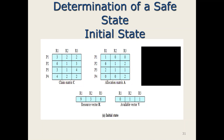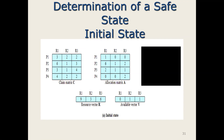We will take an example. We have the claim matrix C, which represents the maximum need for each process. Then we have the allocation matrix A, showing resources already allocated to P1, P2, P3, P4. The system has a resource vector for R1, R2, R3. After allocating resources for each process in the allocation matrix A, the available vector V indicates what is currently available in the system.